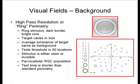High pass resolution or ring perimetry is shown here — this is really more just shown for informational purposes. The light stimulus is a dark ring filled by an inner lighter ring and surrounded by a darker ring. The test target varies in size and is tested at 50 locations throughout the field. It's thought that this test can stimulate the parvocellular retinal ganglion cell population and therefore may detect glaucomatous damage better. As far as I know, it's really only done for research purposes.